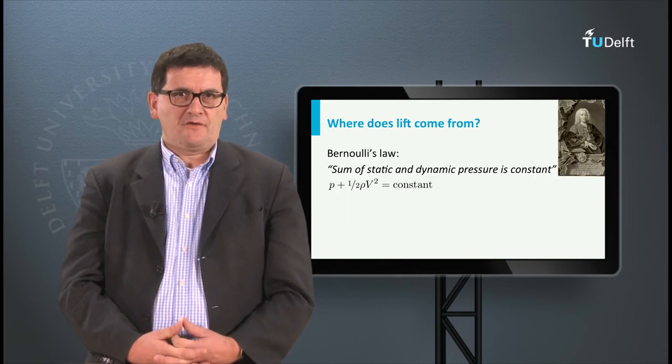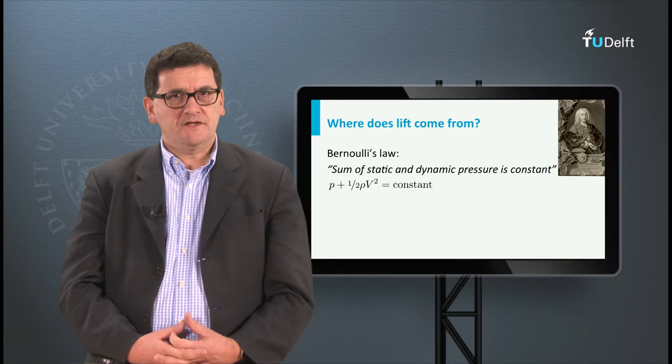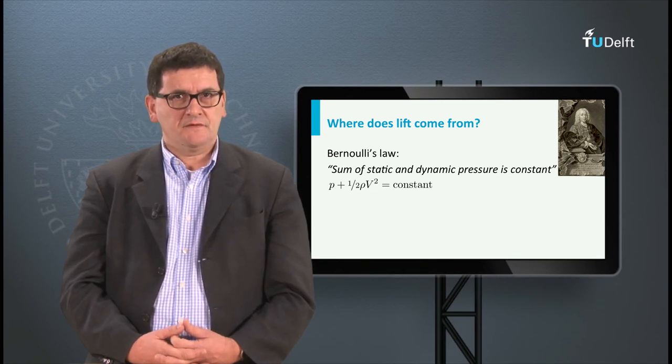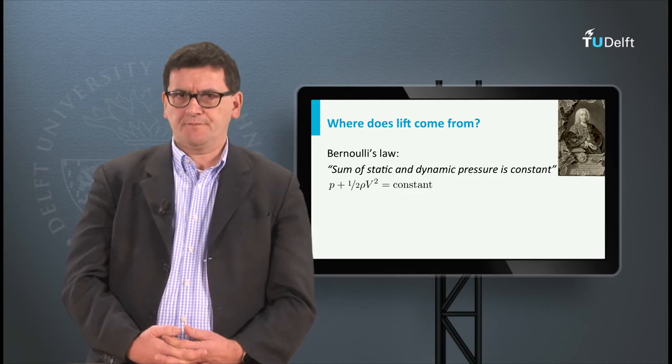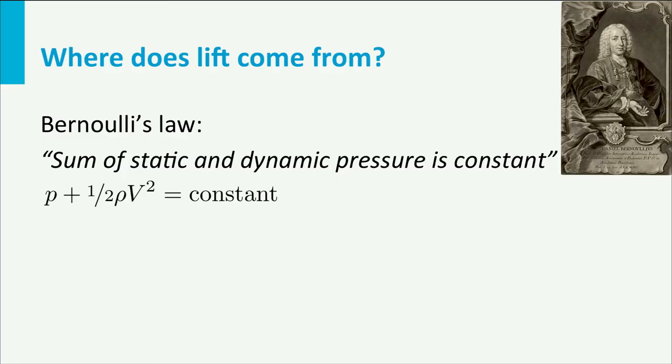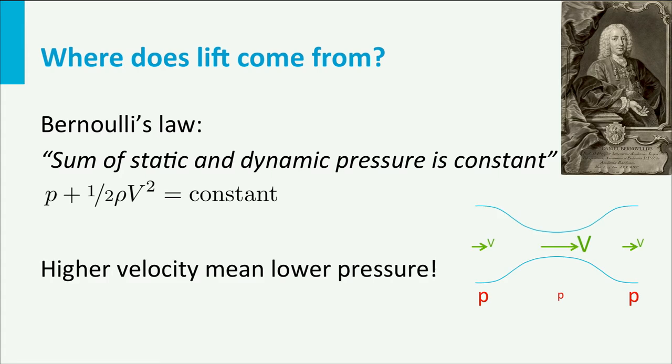We have looked at the formula for lift, but how is the lift force generated? One way of explaining is by using the law of Bernoulli. He postulated his formula as the sum of static and dynamic pressure is constant. In formula, P plus half rho V squared is constant. This means that when the speed increases the local pressure drops or decreases.